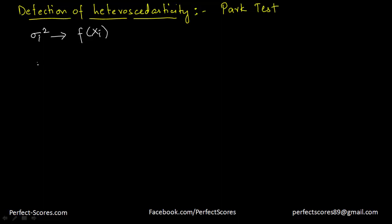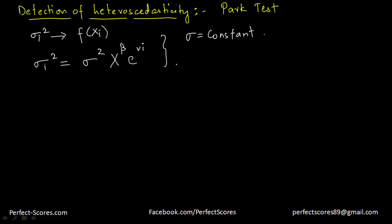The test suggests that the variance of the error term is actually equal to a constant — this is variable and this is a constant — times Xi raised to the power beta, times e raised to the power v_i. Where the first term is a constant, Xi is your explanatory variable, and v is your error term or disturbance term.